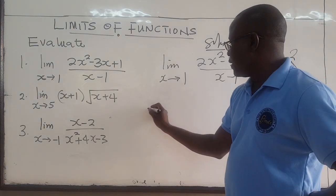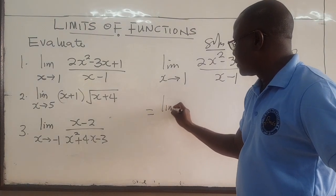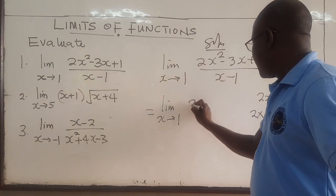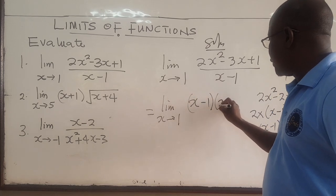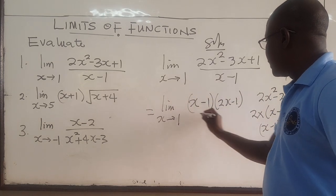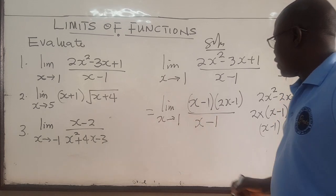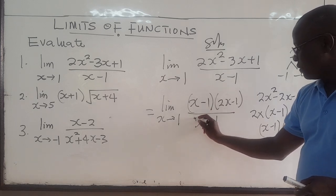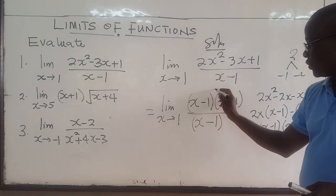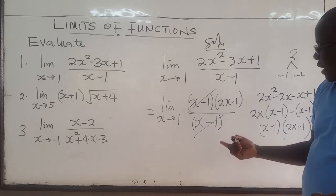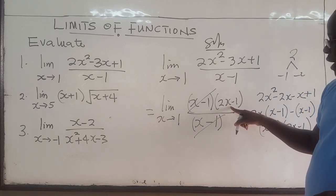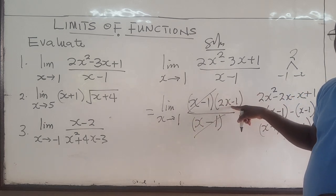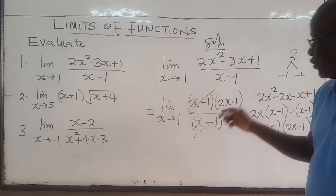So when you come here, this is equal to the limit as x approaches 1 of (x minus 1)(2x minus 1) all over (x minus 1). You notice that you have (x minus 1) in both the numerator and denominator. These will cancel out and the remaining function, 2x minus 1, is now in the domain of x equals 1.